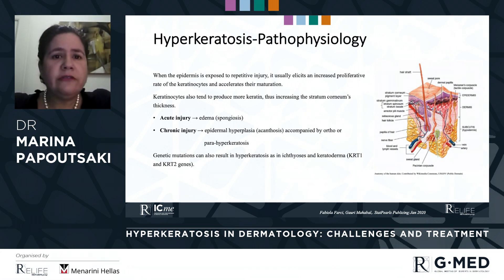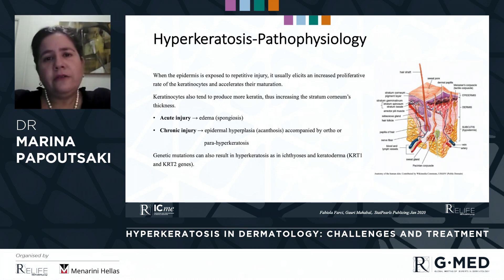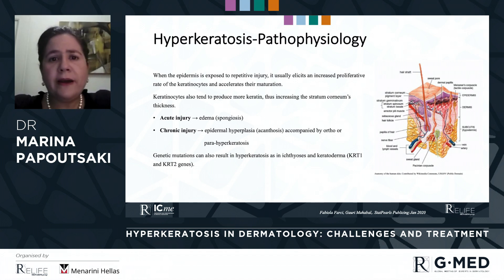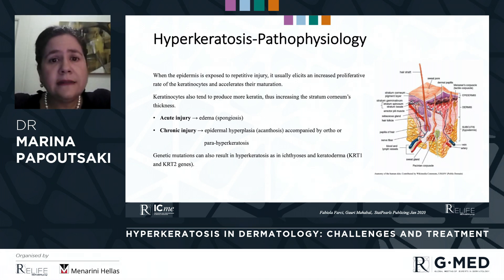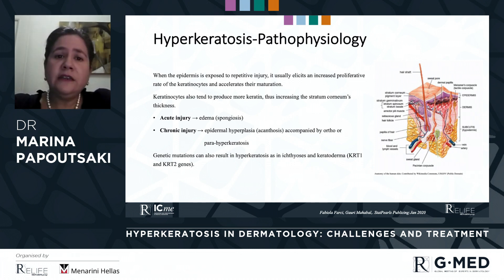Acute injury results in edema, which is translated into spongiosis, while chronic injury results in epidermal hyperplasia accompanied by ortho- or parakeratosis. Genetic mutations can also result in hyperkeratosis, as happens in ichthyosis and keratoderma, where genes KRT1 and KRT2 are mutated.